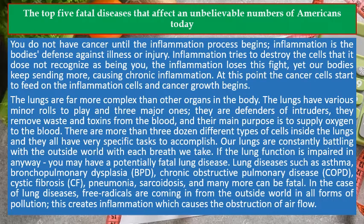The lungs are far more complex than other organs in the body. They have various minor roles to play and three major ones: they are defenders of intruders, they remove waste and toxins from the blood, and their main purpose is to supply oxygen to the blood. There are more than three dozen different types of cells inside the lungs and they all have very specific tasks to accomplish. Our lungs are constantly battling with the outside world with each breath we take — if the lung function is impaired in any way, you may have a potentially fatal lung disease.